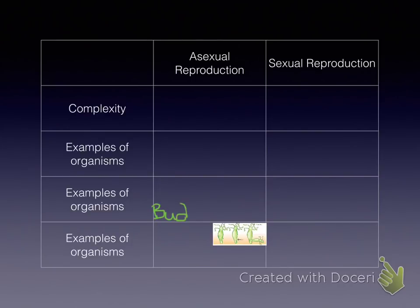Next, our example is budding. Budding is when a part sprouts off the parent. You can see the sprout right there on the right side. Eventually that sprout will drop down and plant next to the parent, and it will be an identical copy right next to it.